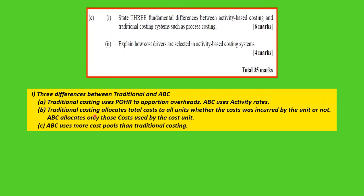The second difference: traditional costing allocates total costs to all units whether or not the cost was actually incurred by that unit. ABC allocates only those costs that are used by the cost unit — if a cost unit did not use a particular activity, it does not incur that cost. Traditional costing divides total overhead by a single base to get the POHR.